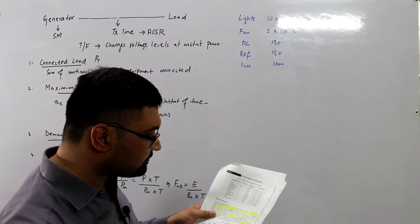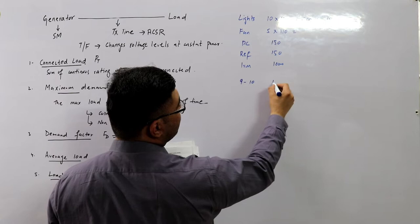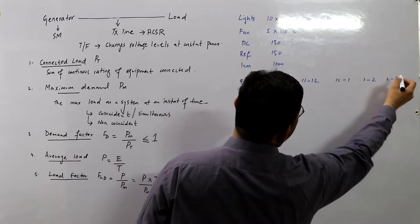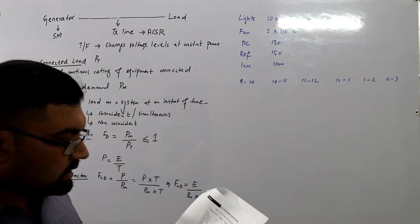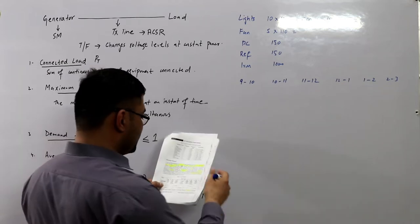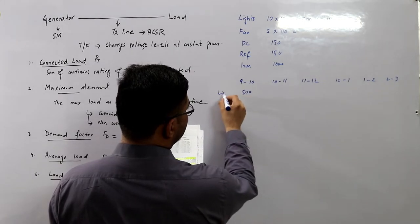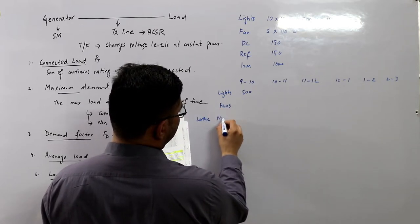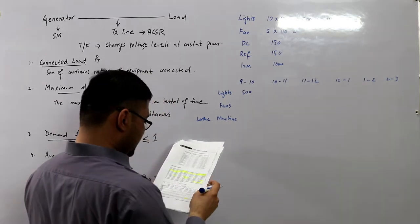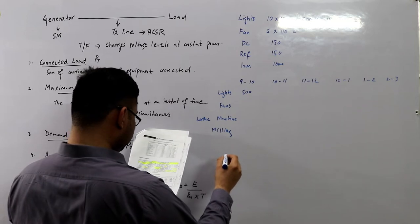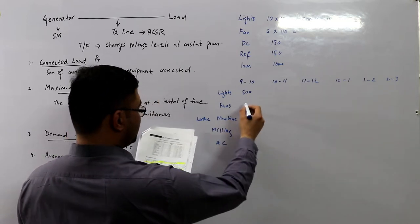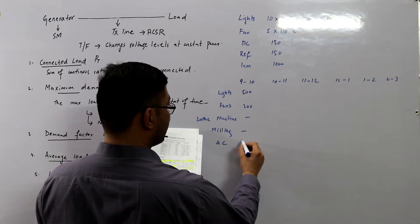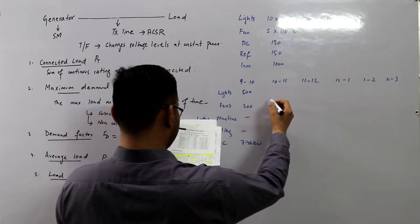For maximum demand, consider a workshop with a load pattern table. The equipment includes lights, fans, a lathe machine, a milling machine, and an air compressor at 7.46 kilowatts. The table shows usage hour by hour — for instance from 9 to 10, lights consuming 500 watts, fans consuming 200 watts, and the air compressor at 7.46 kilowatts are in use.